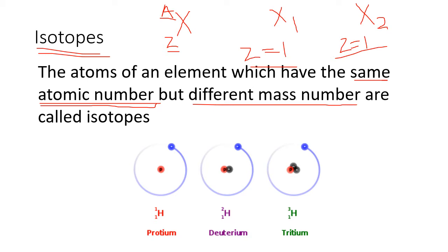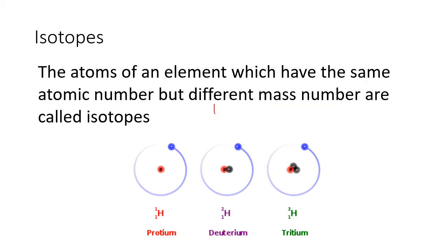Let's take the example of hydrogen, which is generally found in three categories. The first is protium, which has only one proton. With one proton, its atomic number is one, and since there is only one nucleon, its mass number A also equals one.